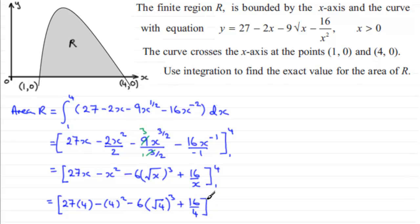So that's our first part. Then we subtract what we get when we substitute x is 1 through here. So that's going to be 27 multiplied by 1, and then you've got minus 1 squared, and then minus 6 times the square root of 1 and that is cubed, and then we've got plus 16 divided by 1.